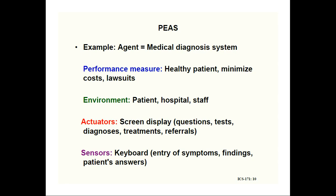Today we are talking about task environments — the environment in which the agent is going to act. An agent can be any software, robot, or human. For any agent, we consider PEAS: Performance Measure, Environment, Actuators, and Sensors. For each agent, we are going to find out its performance measure, environment, actuators, and sensors.